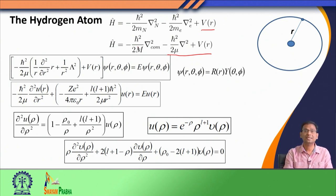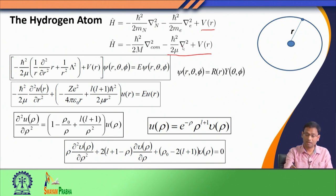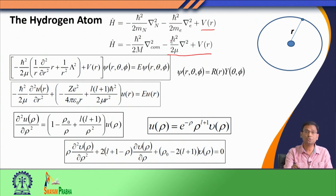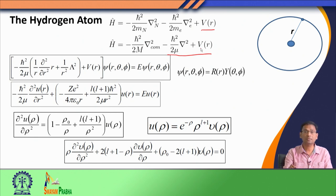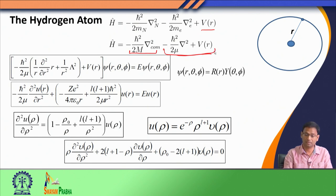Since the mass of the nucleus for the hydrogen atom is at least three orders of magnitude greater than the mass of the electron, the centre of mass movement is essentially dictated by the movement of the nucleus. So the first term is the nuclear degree of freedom. The second term contains the reduced mass mu; again for the same reason, the reduced mass will be dominated by the mass of the electron. The second term becomes the kinetic energy associated with the electron, and the third term is our potential energy.